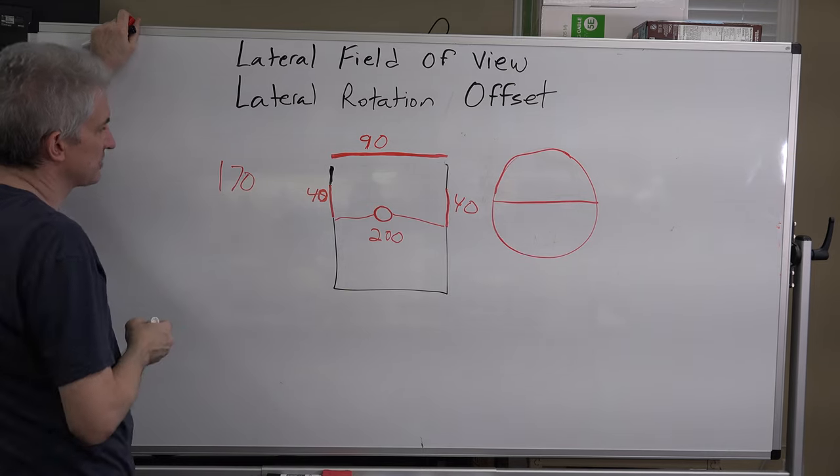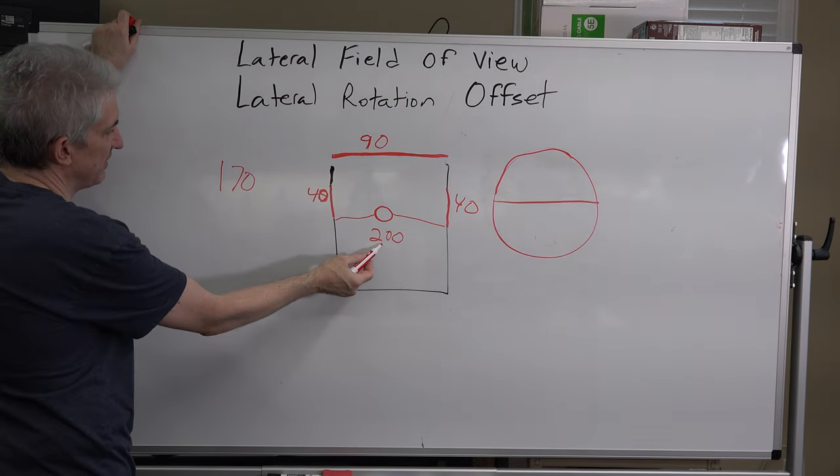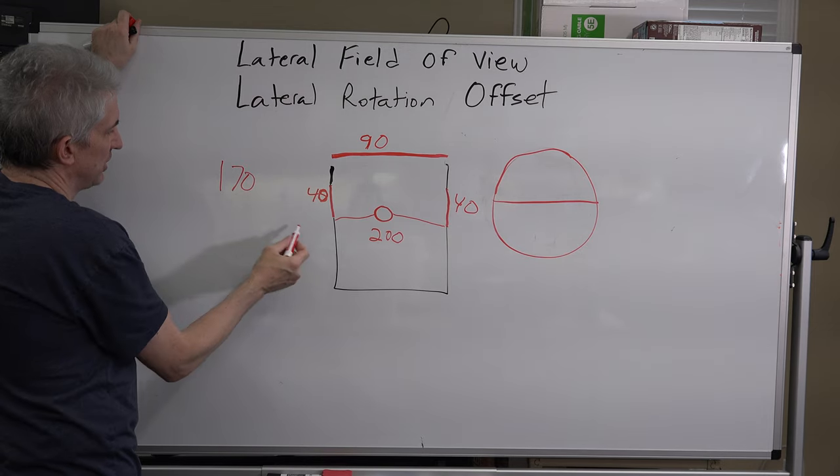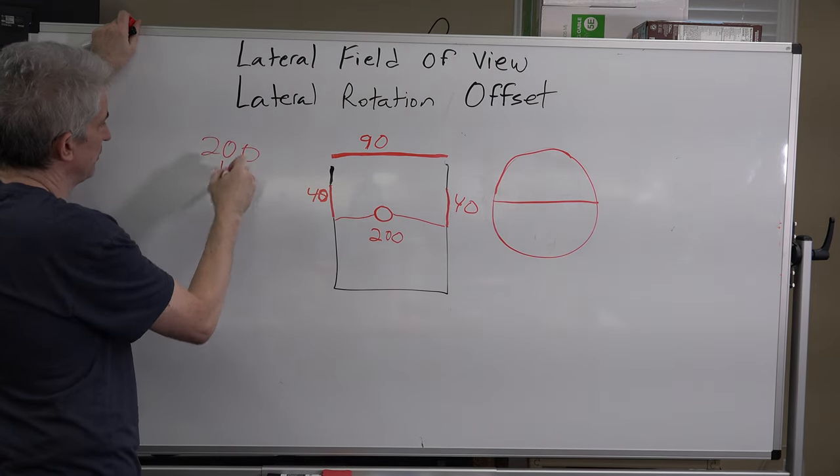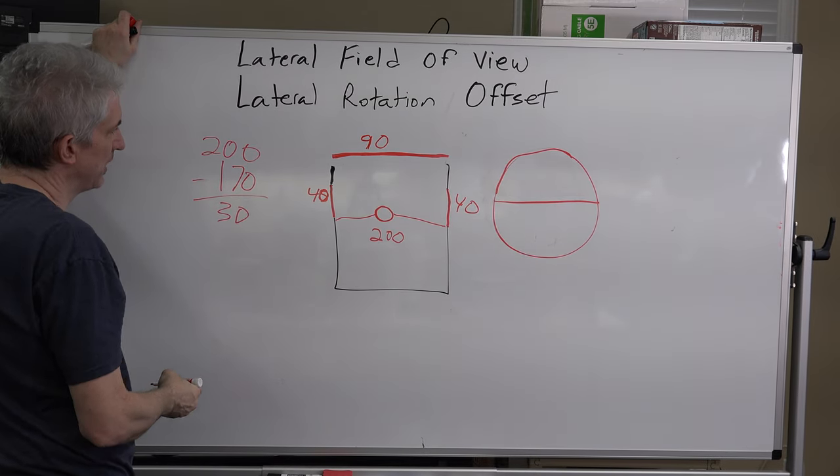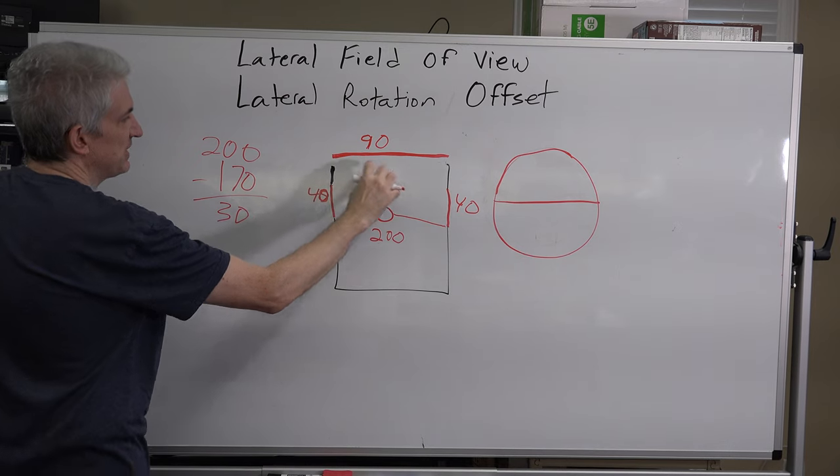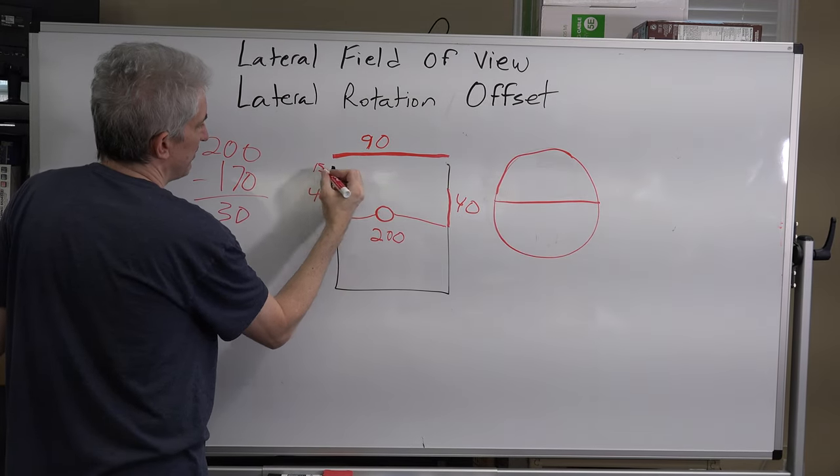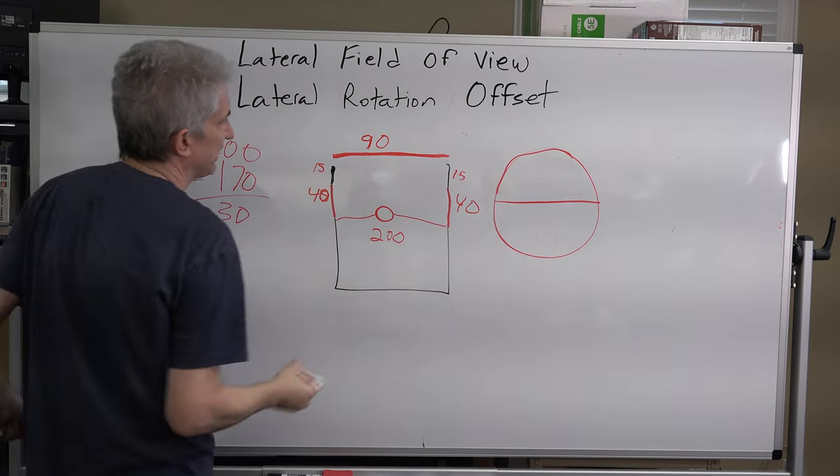40, 40, and 90 is 170. We decided that this total lateral field of view was 200, so obviously 200 minus 170 is 30. So that means we've got 15 degrees of lateral field of view missing right here. 15 and 15.